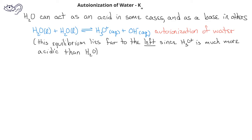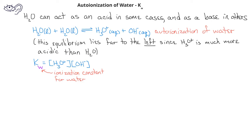We could write an equilibrium constant expression for this equilibrium system. We would come up with the equilibrium constant K equal to the concentration of the hydronium ion times the concentration of the hydroxide ion. We would not have the water molecules in the denominator because water is in the liquid phase. We used to use a subscript C to indicate we are using concentrations, but for this particular equilibrium constant we are going to use a subscript W. This W indicates that this equilibrium constant is the ionization constant for water, related to the auto-ionization of water.